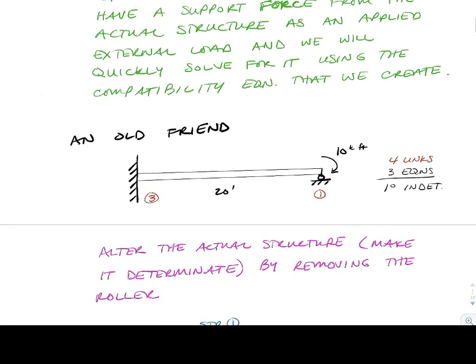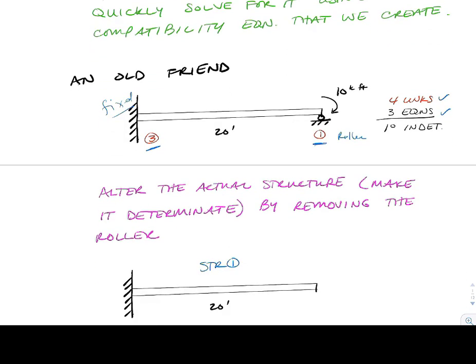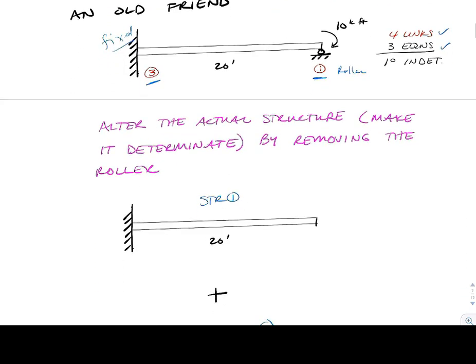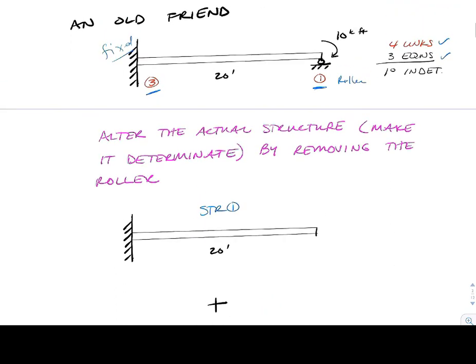Let's go back to an old friend — we've seen this beam before. Looking at a fixed-roller beam, also known as 3 in the wall, 1 on the ball. We have 4 unknowns but only 3 linearly independent equations, so this is a 1-degree indeterminate structure. We're going to alter the actual structure and make it determinate.